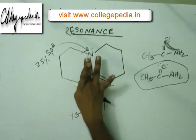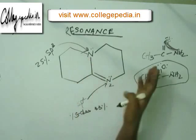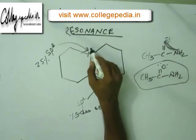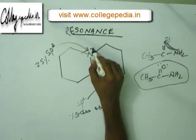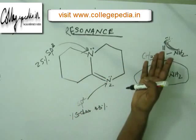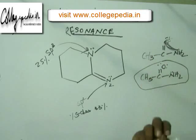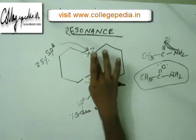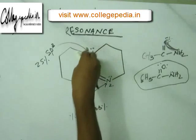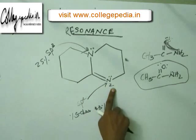N1, although it is less electronegative, is not more basic. Why is it not more basic? Because we are thinking that the lone pair is on N1 and N1 is less electronegative, so N1 will offer its lone pair more to any external species. But this thinking is wrong, because the lone pair does not reside in the orbital of N1 — it gets diffused into the orbital of N2.